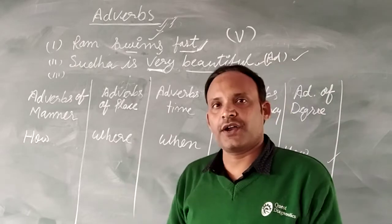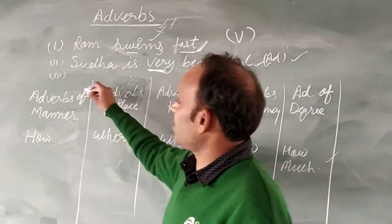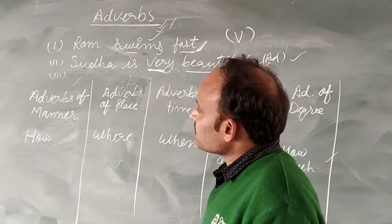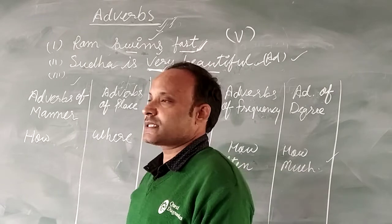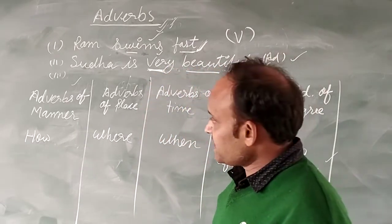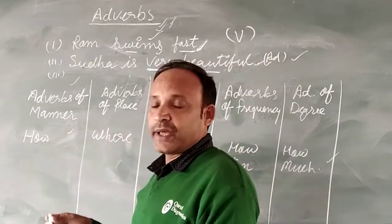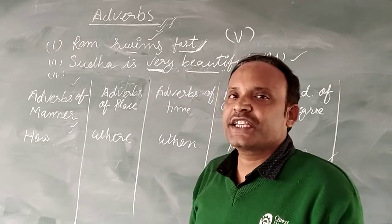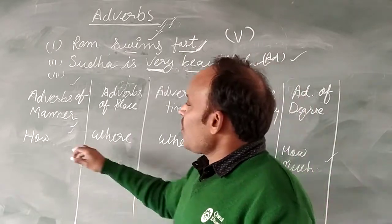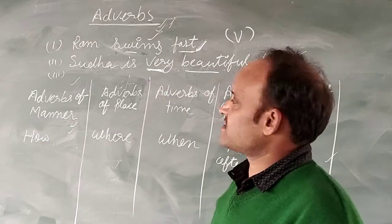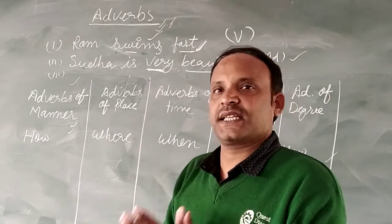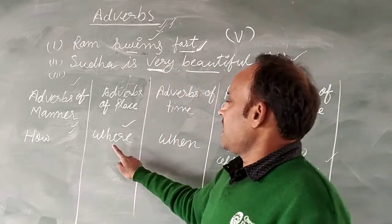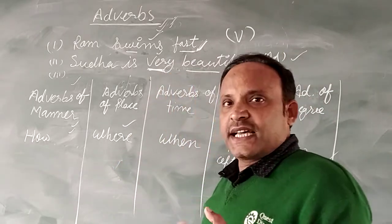There are five categories of the adverb. First of all, we talk about the adverb of manner. Adverb of manner tells us about how an action is done — meaning in what manner or way the action, the verb, is completed.